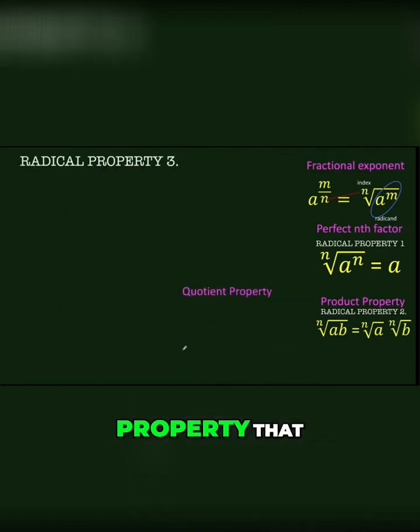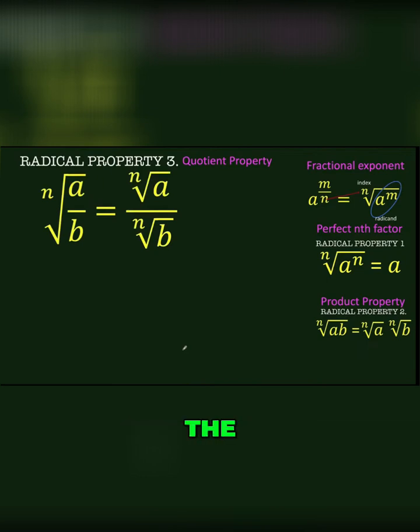And let's proceed to the last property that we are going to use in this lesson, the quotient property of radicals. When you have the n-th root of a over b, that is equal to the n-th root of the numerator divided by the n-th root of the denominator. We can show that this is true using, again, the exponential form of the number.